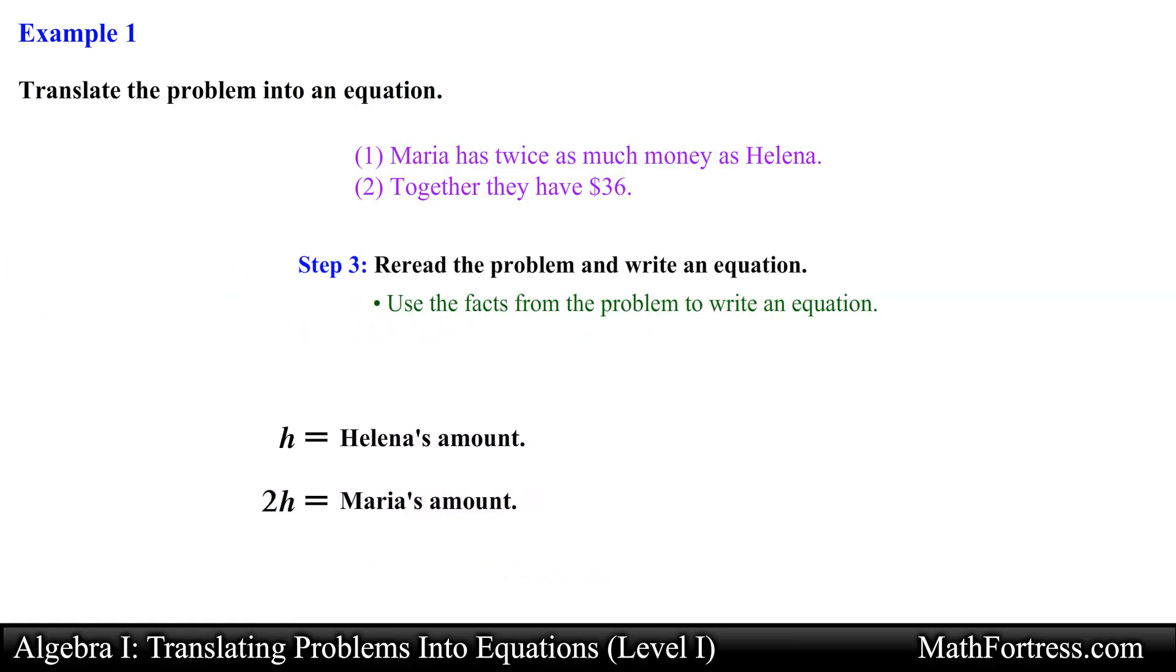All we need to do now is to write an equation relating these two expressions. Notice that in sentence 2 we are told that together Maria and Elena have 36 dollars. This means that if we were to add the amount of money that Maria and Elena have they would add up to 36 dollars. So our equation becomes h plus 2h equals 36 and this is our final answer. We have successfully translated the word problem into an equation. In a later video we will learn how to solve this equation. For now we want to practice using these three steps which provide the framework needed so we can tackle these and future word problems.